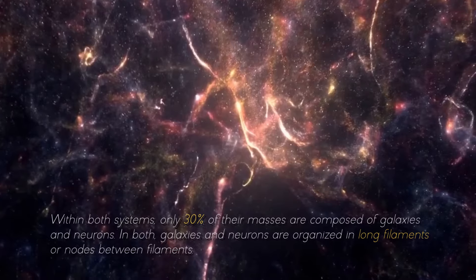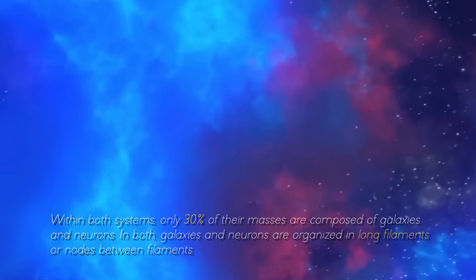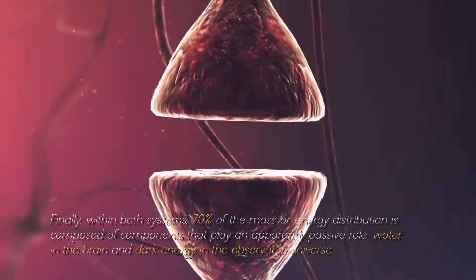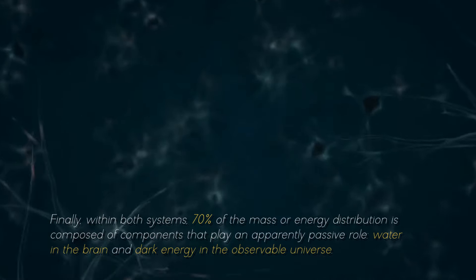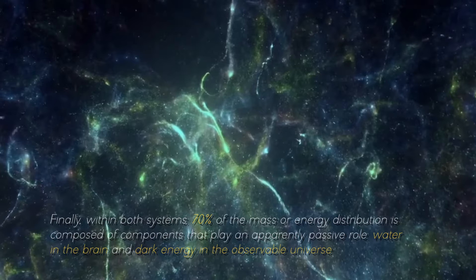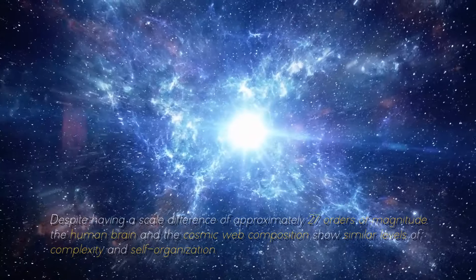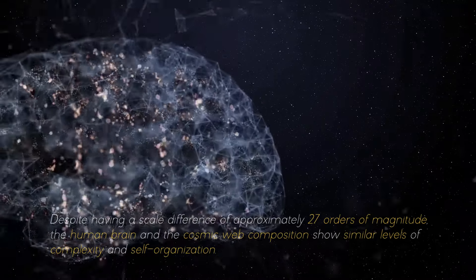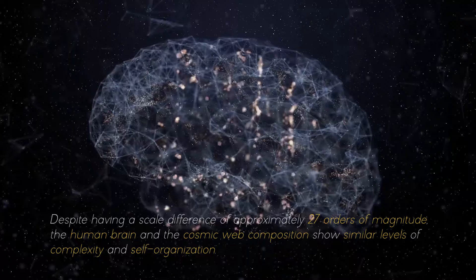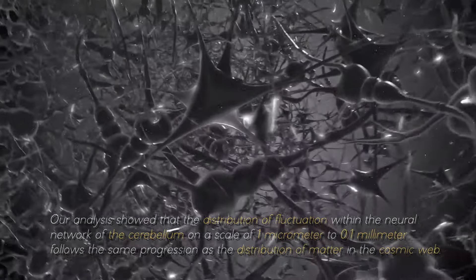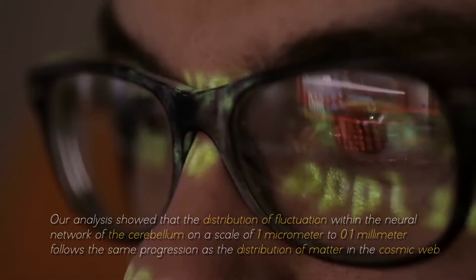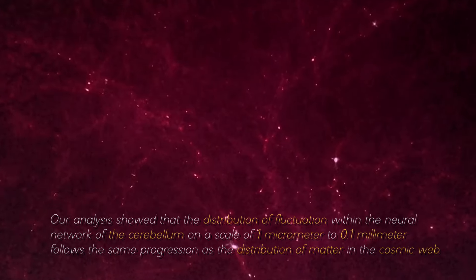Within both systems, only 30% of the masses are composed of galaxies and neurons. In both, galaxies and neurons are organized in long filaments and nodes between filaments. Finally, within both systems, 70% of the mass or energy distribution is composed of components that play an apparently passive role, water in the brain and dark energy in the observable universe. Despite having a scale difference of approximately 7 orders of magnitude, the brain and the cosmic web composition show similar levels of complexity and self-organization. Our analysis showed that the distribution of fluctuation within the neural network of the cerebellum on a scale of 1 micrometer to 0.1 millimeters follows the same progression as the distribution of matter in the cosmic web, commented one of the researchers in charge of this project.